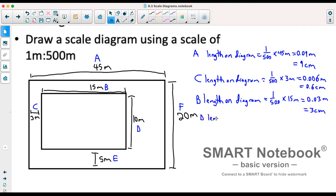Next we have D, so length on diagram. It's going to be 10. So we've got 1 over 500 times 10 meters, which is 0.02 meters, which is two centimeters.